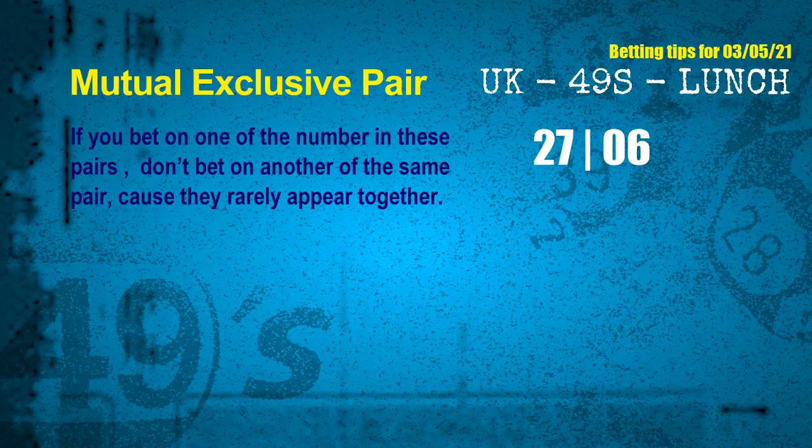Now we have some following ones and ball colors. Here are some tips to increase hit odds, such as mutual exclusive pairs. These numbers in a pair both match the following ones and colors, but according to thousands of results, they rarely appear together — which means if you bet on one of them, don't bet on the other in the same pair. The mutual exclusive pair for the next draw is 27 and 06.